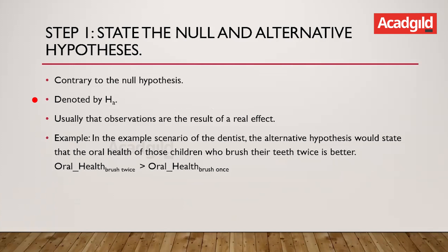What is an alternative hypothesis? It is contrary to the null hypothesis, denoted by Hₐ, and it usually suggests that observations are the result of a real effect. In our dentist example, the alternative hypothesis would be that there is indeed an improvement in oral health if children brush their teeth twice a day rather than only once.